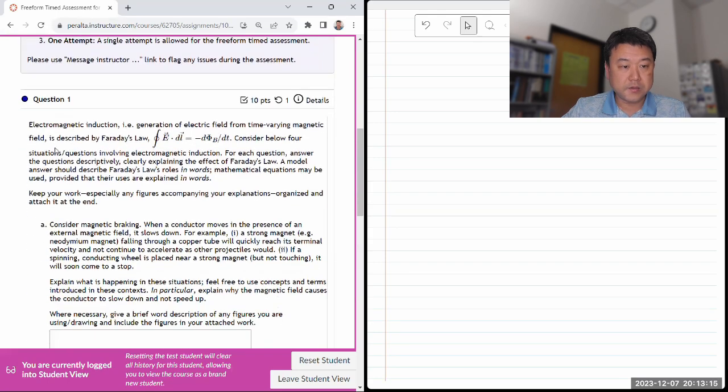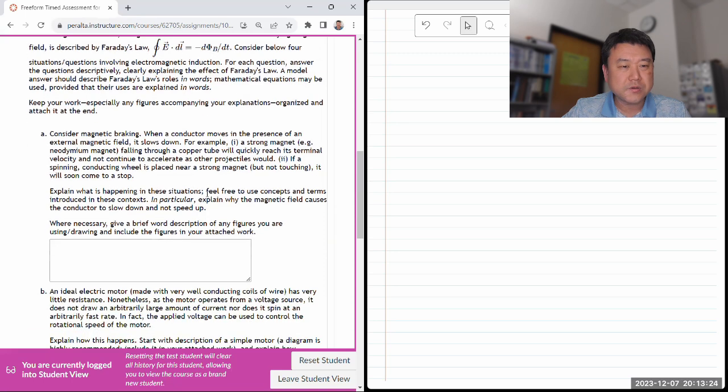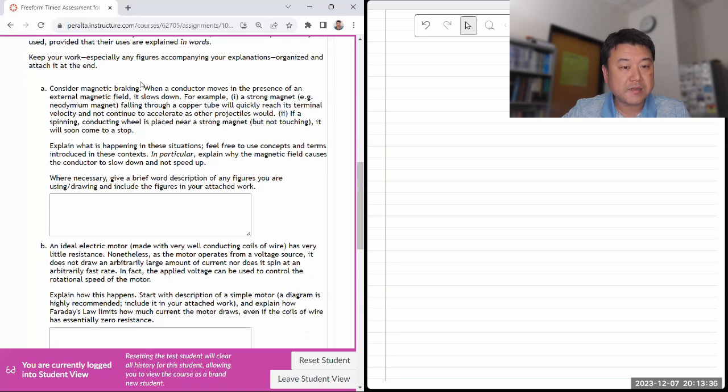Okay, so electromagnetic induction is Faraday's law, conservative law for situations. Yeah, this is a question where it's a lot of word descriptions. So I'll do that. If there's a figure necessary, I'll draw that here. Answer is descriptive. Yeah, explaining Faraday's law. Model answer should be described in words. And magnetic breaking when a conductor is spinning, it slows down.